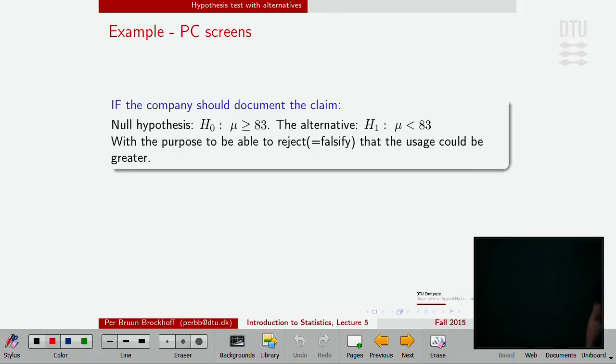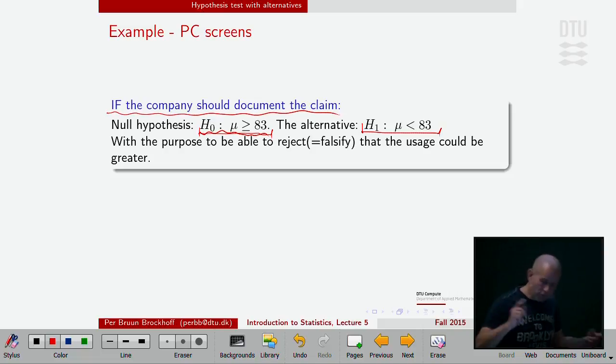Then there could be two different things, depending on who you are and where you are, that could turn the hypothesis in either way. Both of them one-sided, but in each direction. If you were the company, and that happens, that you have to prove something towards the outside world, to the agencies or whoever. If you are going to prove that you are below, you would put the hypothesis like this, because you would like to falsify, you would like to reject that you could be above, right? So that's one-sided. You would actually put the null to be above and the alternative to be below, because you want to reject the null, falsify the null. So that would be a one-sided argument that should be made here, a one-sided alternative.